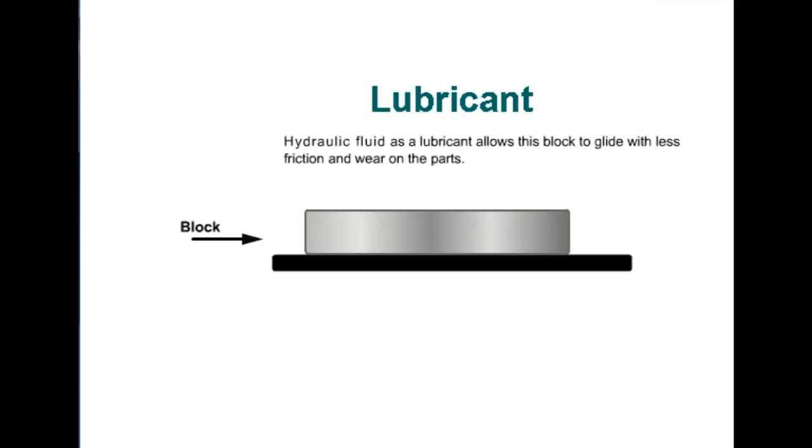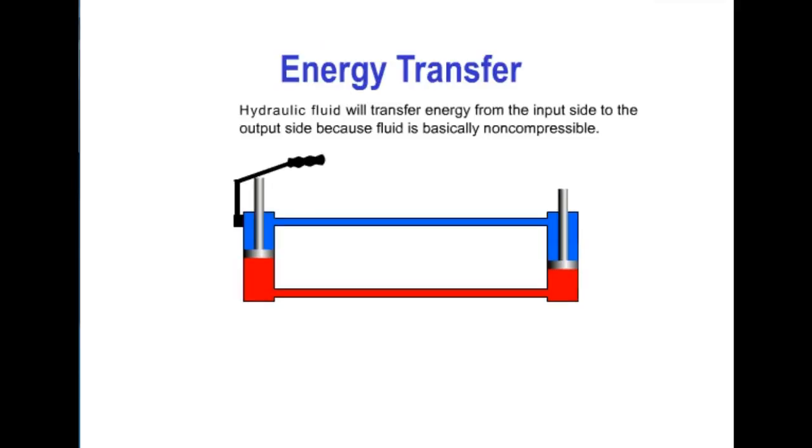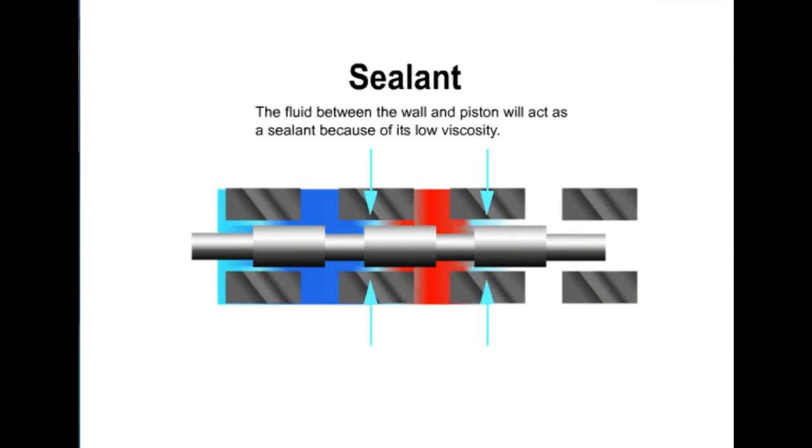Let's look at some examples of these. In our example of lubrication, hydraulic fluid as a lubricant allows this block to glide with less friction and wear on the parts. In our example of heat transfer medium, the heated fluid enters and radiates its energy out and leaves the system cooler. In our example of energy transfer, hydraulic fluid will transfer energy from the input side to the output side because fluid is basically non-compressible. In our example of a sealant, the hydraulic fluid between the wall and the piston will act as a sealant because of its viscosity.